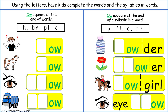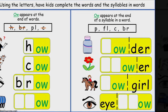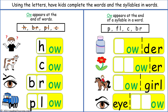Using the letters, have kids complete the words and syllables in words. These two are both part of tip one. The first column shows O-W appearing at the end of words. Have kids find the correct beginning letter or letters to make each word. The first word is 'how,' the second word is 'cow,' the third word is 'brow,' and the fourth word is 'plow.'